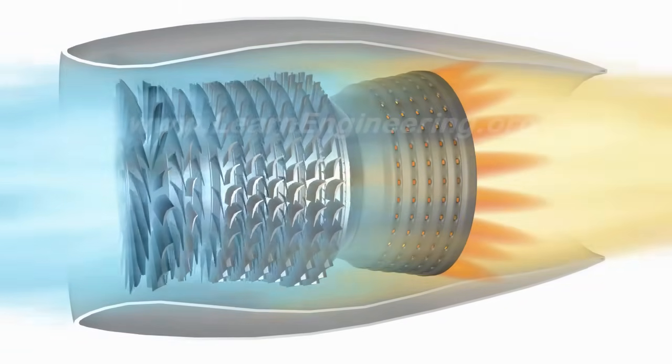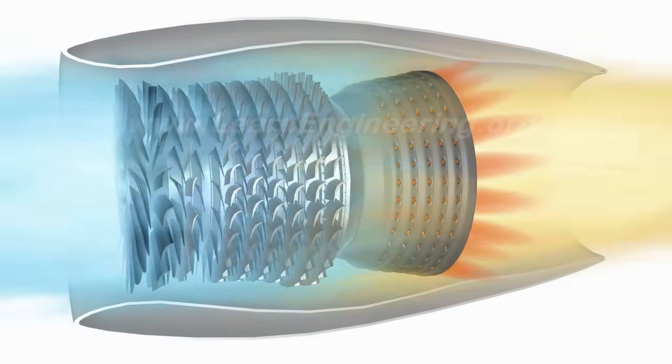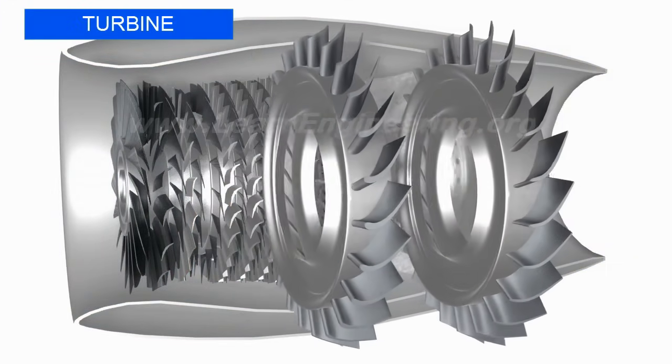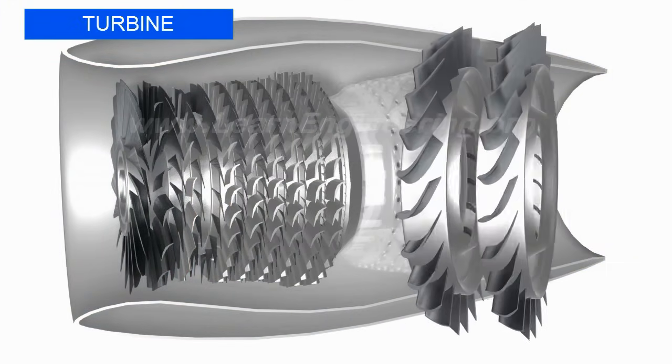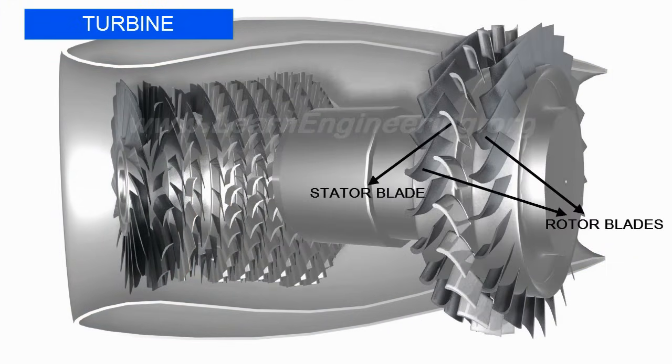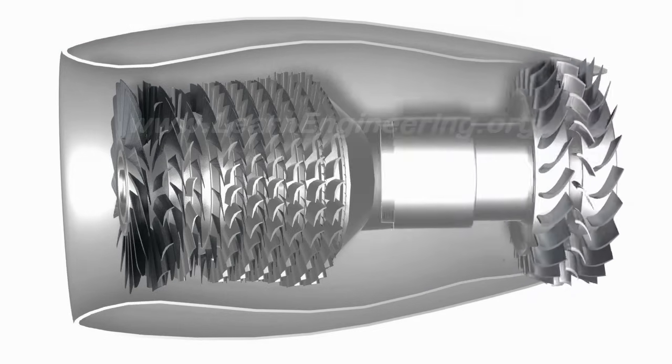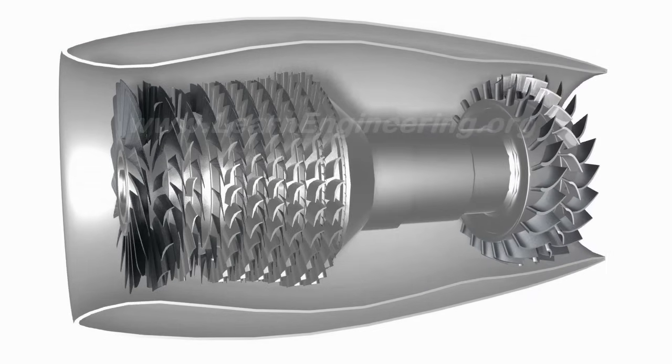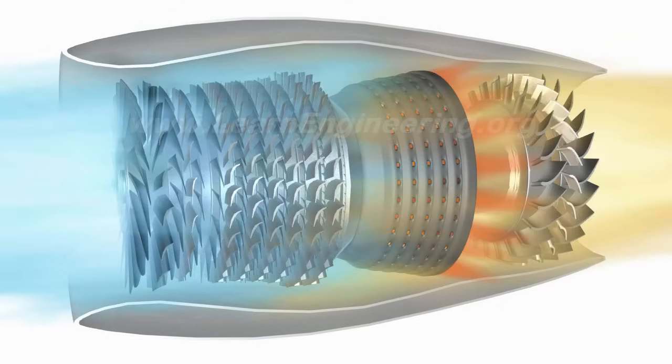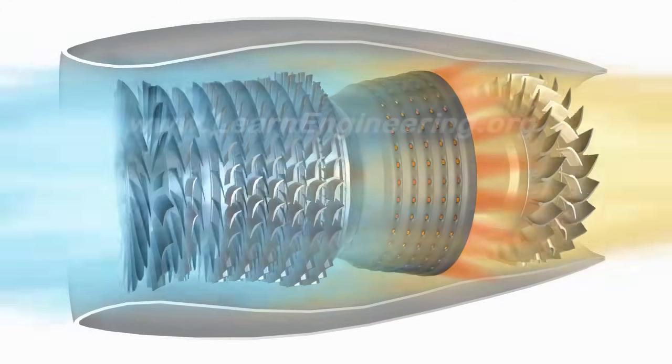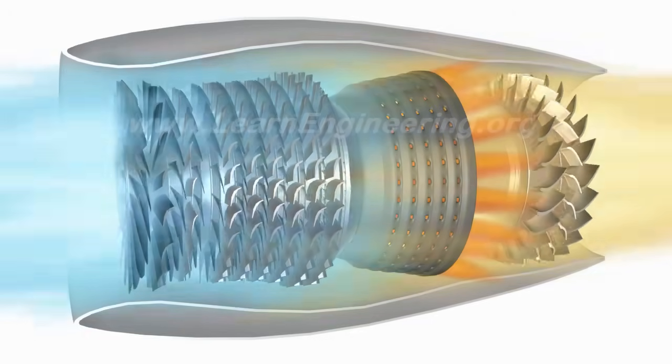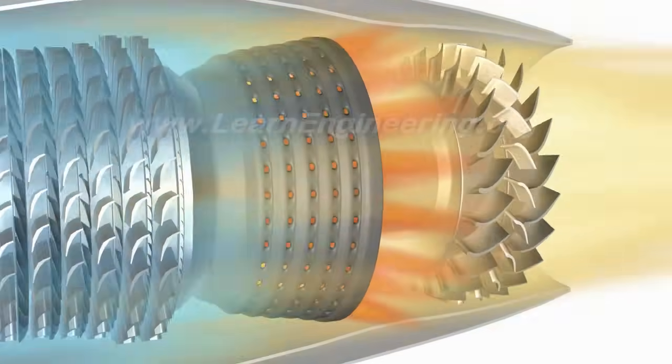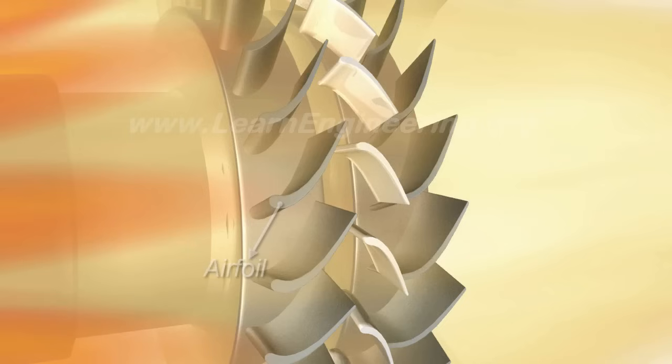The compressor receives the energy for the rotation from a turbine, which is placed right after the combustion chamber. The compressor and turbine are attached to the same shaft. The high-energy fluid that leaves the chamber makes the turbine blades turn. You can see that the turbine blades have a special airfoil shape, which creates lift force and makes them turn.